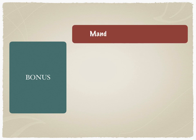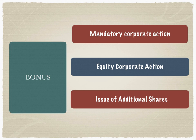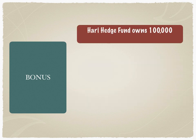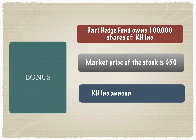Let's take another example of a corporate action similar to stock split — that's bonus. It's a mandatory corporate action, it's an equity corporate action, and it involves the issue of additional shares. The bonus is announced in a ratio showing the investor's entitlement. Going back to Hurry Hedge Fund, which owns about a hundred thousand shares of KH Inc at a market price of fifty dollars — KH Inc announces a four-to-one bonus.